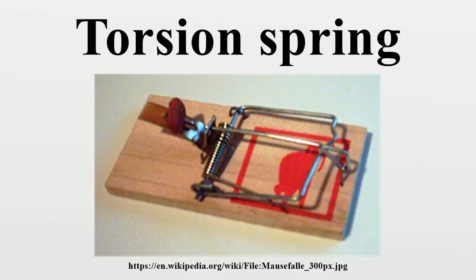To measure the unknown force, the spring constant of the torsion fiber must first be known. This is difficult to measure directly because of the smallness of the force. Cavendish accomplished this by a method widely used since — measuring the resonant vibration period of the balance. If the free balance is twisted and released, it will oscillate slowly clockwise and counterclockwise as a harmonic oscillator, at a frequency that depends on the moment of inertia of the beam and the elasticity of the fiber. Since the inertia of the beam can be found from its mass, the spring constant can be calculated.